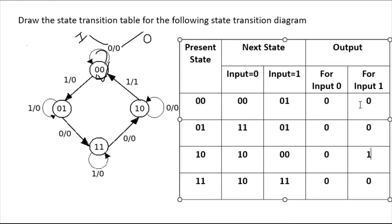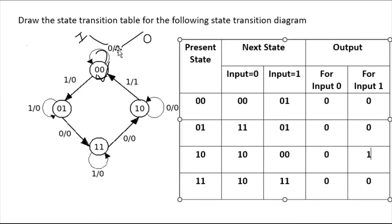Now come to the one-zero state. When input is zero there is no transition, so put one-zero, and the output is zero. When input is one it is reaching to zero-zero and output is one. So this is your transition table for the whole diagram. Remember: the first value in the arrow written as input-oblique-output tells you the input and output. I hope you are able to draw this table. Let's take another example.